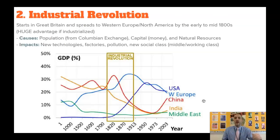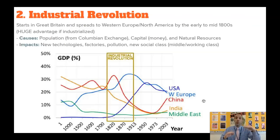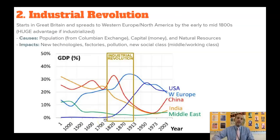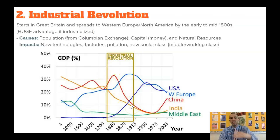New technologies emerge from the factory system — steam engines, telegraph lines, and more — but pollution comes with them. A new social class structure forms: instead of just farmers, nobles, and merchants, there's now a middle class of factory owners and investors, and a working class of factory workers. A GDP chart shows how industrialized countries like the United States dramatically increased their output, while non-industrialized countries like China and India saw their GDP decline — until China successfully industrialized in the late 1970s.